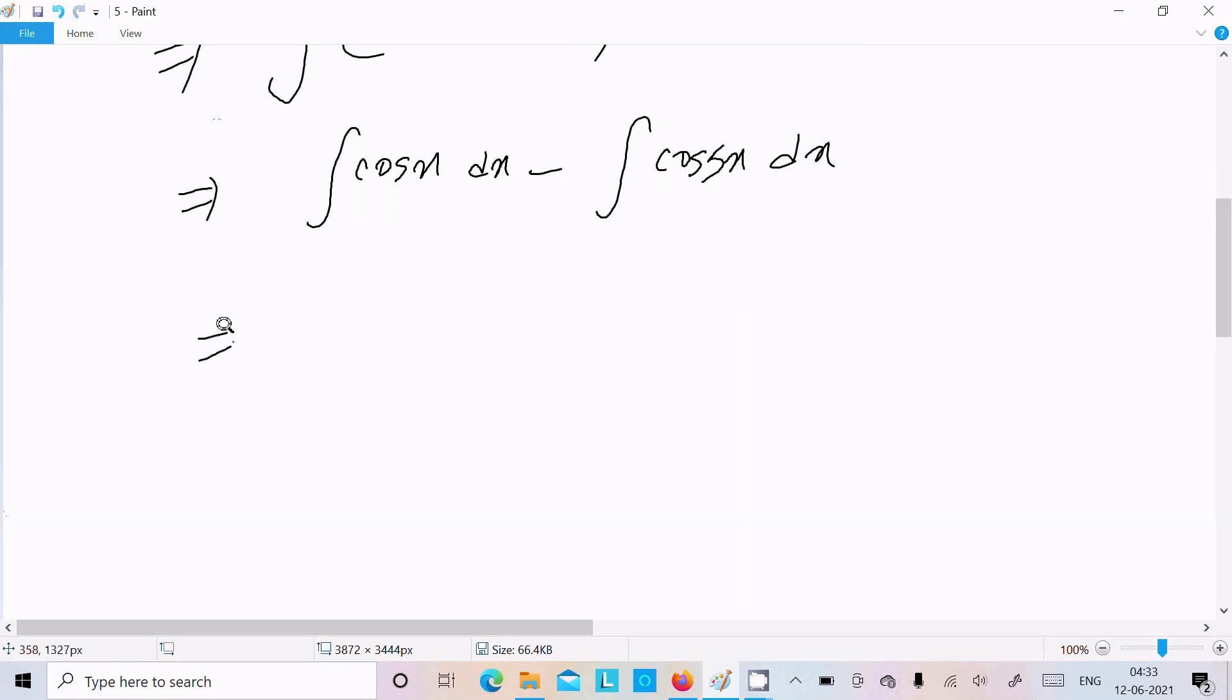Cos integration that is sin x, and minus cos 5x integration that is sin 5x, and since 5 is there, so we need to divide by 5, and add the constant.